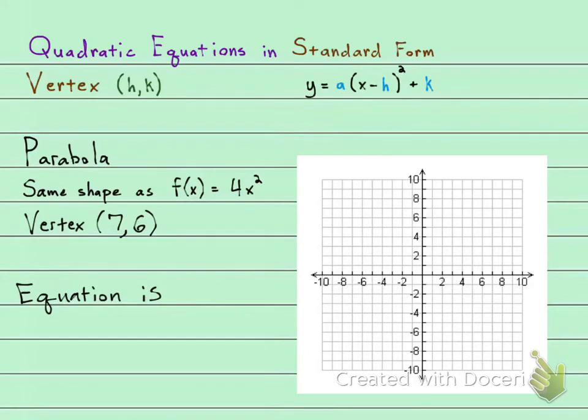We have a question telling us that we have a parabola and that it's the same shape as f(x) = 4x², and it's also telling us that the vertex is 7 comma 6. They want us to write the equation.